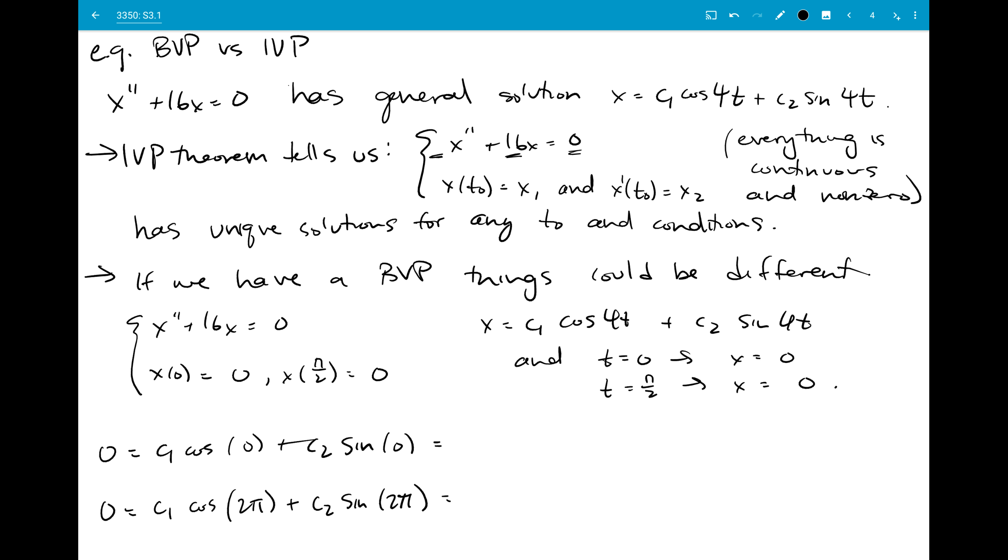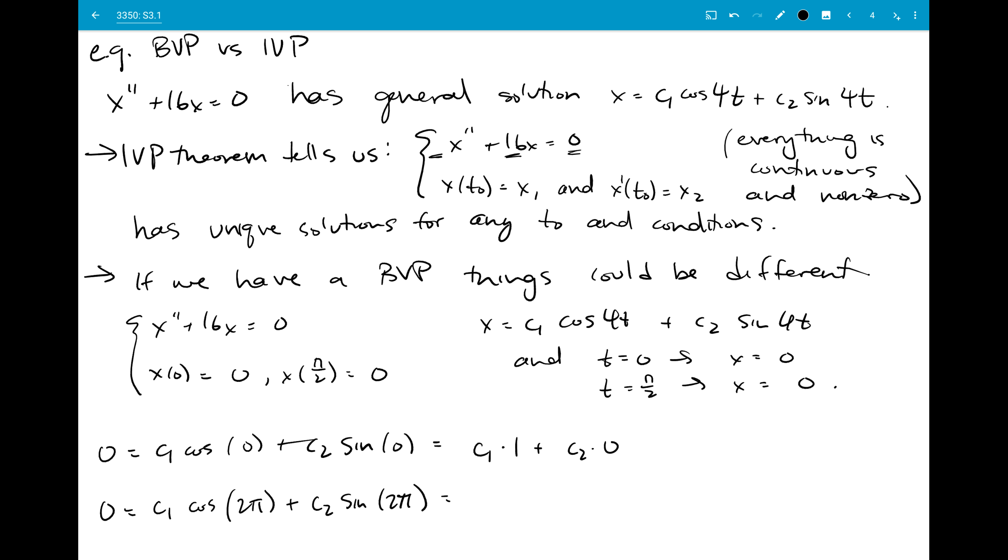But when I take cosine of 0, I get 1, and when I get sine of 0, I get 0. So this is just c1 times 1 plus c2 times 0. Same thing happens at 2 pi because cosine and sine repeat themselves. So I get c1 for both, and so both of these things tell me that c1 should be 0, but it doesn't tell me anything about c2.